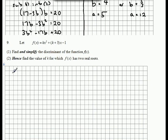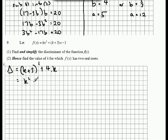Part 1 of Question 9: we've got to work out the discriminant — b squared take 4ac. In this case it will be k plus 3 squared, take 4 times k times negative 1, which makes it a plus. Expand your brackets with a perfect square and collect like terms.